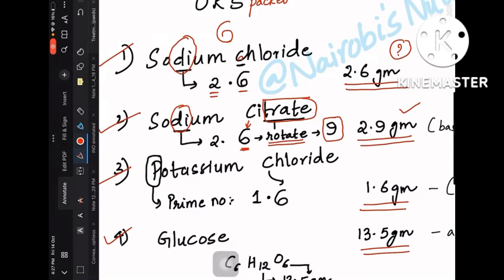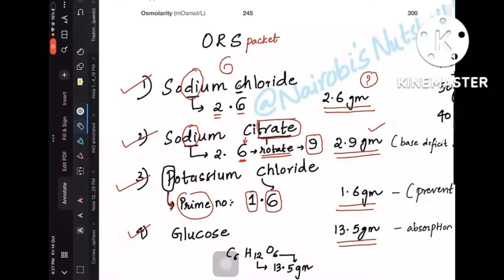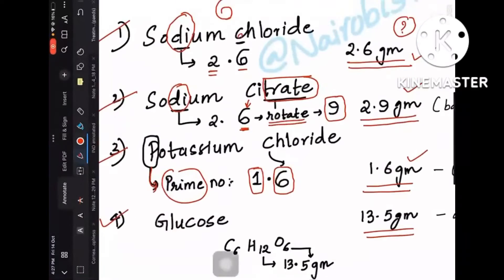Coming to potassium chloride, potassium—the first prime number is 1, so 1 point, and C is for 6 again, so 1.6. So 2.6 is sodium chloride, 2.9 is sodium citrate, and 1.6 is potassium chloride.